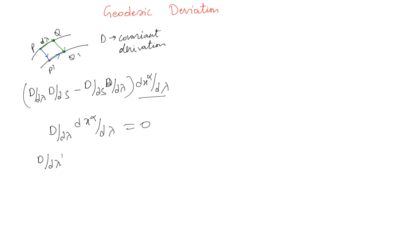We reduce to calculating d/dλ (d/ds) of dx^α/dλ. Here, s is the parameter parameterizing how you go from one geodesic to the other, while λ is the parameter that goes along the geodesic.